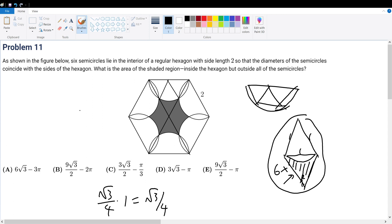And then we can find times 2, which gives root 3 over 2. So that's the entire rhombus-looking shape.